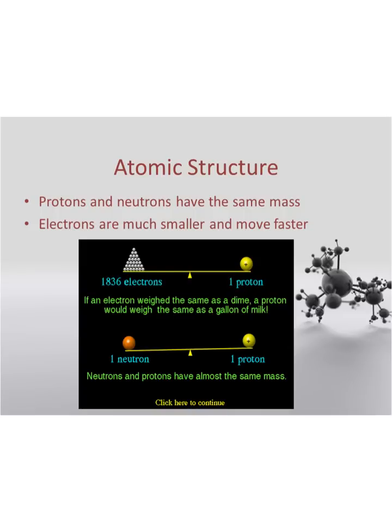Just to give us some perspective: protons and neutrons have just about the same mass, so they take up the same amount of matter. Electrons are way, way smaller, and because they're smaller they have a lot more ability to move faster. This picture gives a great demonstration of their relationship to each other. So if one electron weighed the same as a dime, a proton would be the same as a gallon of milk. If you imagine holding a dime in one hand and a gallon of milk in another, you'd definitely see which one is more massive.